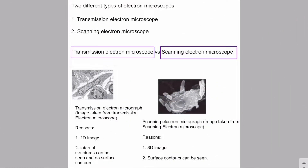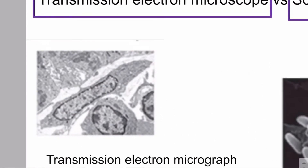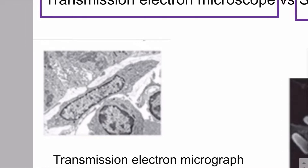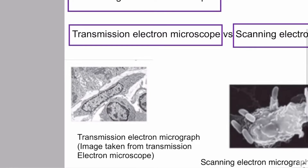In this video lecture we will discuss the two different types of electron microscopes. The first one is the transmission electron microscope and the second one is the scanning electron microscope. There are many differences between both microscopes, but for AS level biology examination, what you need to know is that they will give you pictures and ask you whether the image is taken from the transmission electron microscope or the scanning electron microscope. This is high yield for AS level biology examination.